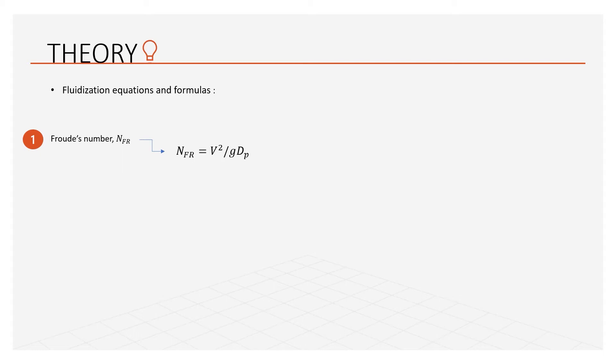If N_Fr is less than unity, smooth fluidization occurs. If N_Fr is greater than unity, bubbling fluidization will occur. Thus, this equation is important to determine the nature of fluidization.